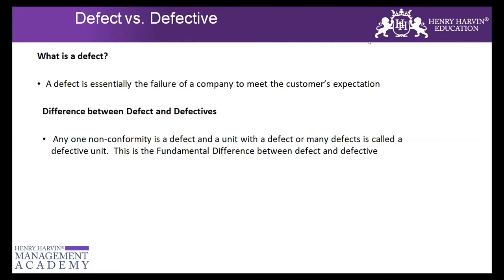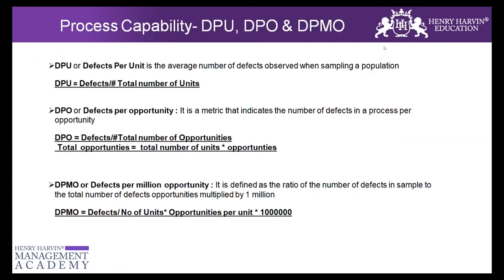So that's the difference between defect and defective. Now we will talk about some process capability measures: DPU, DPO, and DPMO. DPU stands for defects per unit, DPO stands for defects per opportunity, and DPMO stands for defects per million opportunities. With these three metrics, I can assess my current process capability and calculate the sigma level.